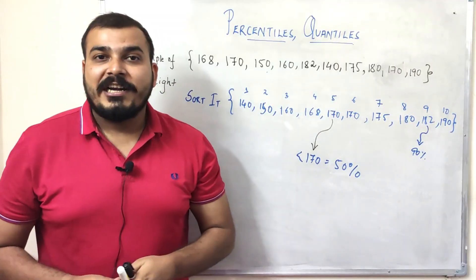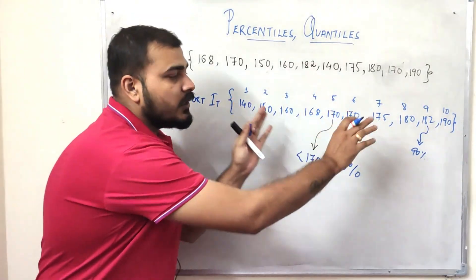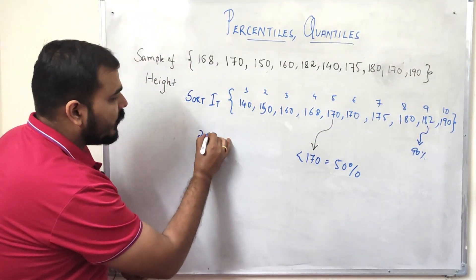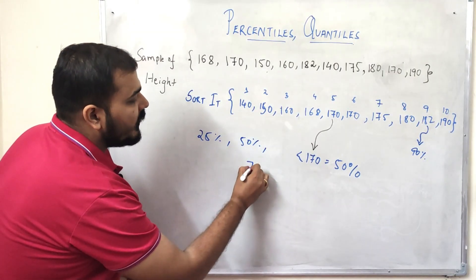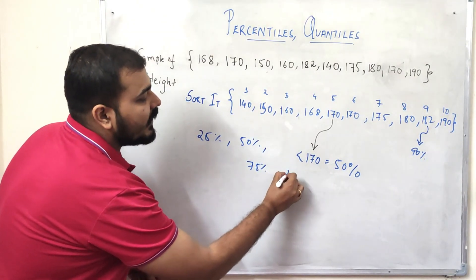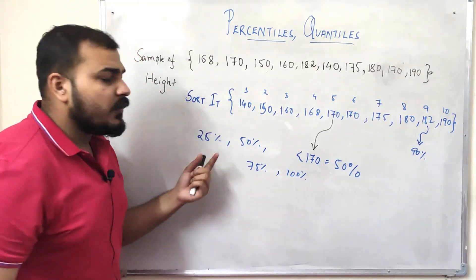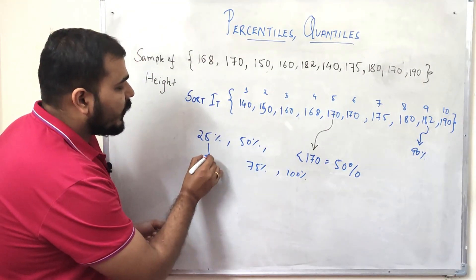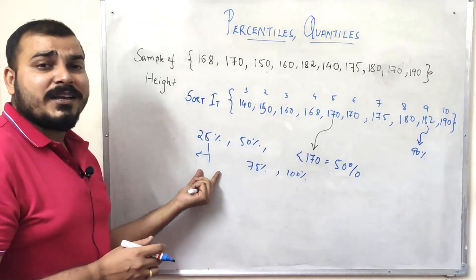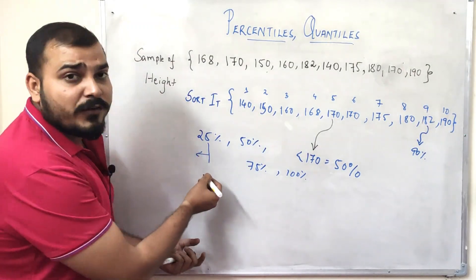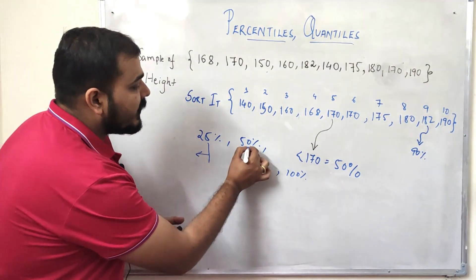Now we are going to understand what exactly are quantiles. See guys, from this particular distribution, if I get the value as 25 percentile some value, 50 percentile some value, 75 percentile some value, and finally 100 percentile some value - what does this basically mean? This indicates that 25 percent of values in this distribution are less than this particular value for 25 percentile. Similarly, 50 percent of our values are lesser than the value for 50 percentile.